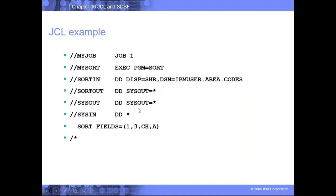So these are all DD statements. You have one job statement, one exec statement, and multiple DD statements. There is one DD statement that signifies input and another DD statement signifying that you are showing the sorted output on the system, because you coded it as SYSOUT equals star. If you give a DSN instead, the sorted input becomes the sorted output file.